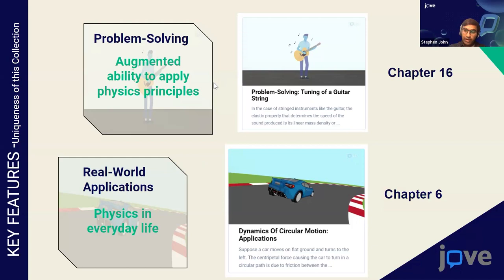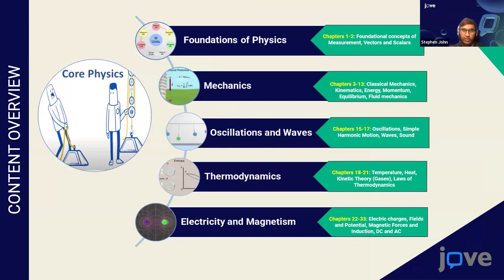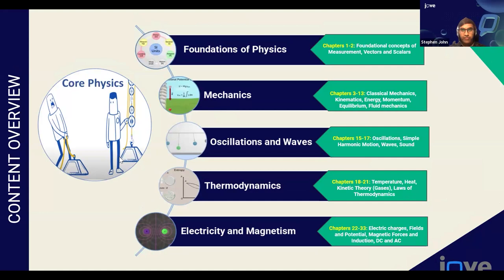Our Core physics animated video lessons cover 33 chapters placed under five sections. The first is Foundation of Physics — chapters one and two — focusing on fundamental concepts like measurements, vectors, and scalars. Students start with foundational concepts before moving to more complicated topics. Under Mechanics, chapters three to thirteen focus on classical mechanics, kinematics, energy equations, momentum, and fluid mechanics.